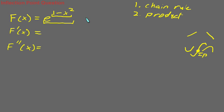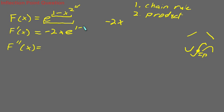The derivative of 1 minus x squared is simply negative 2x. If you can't see why this is, you should go and review your derivatives of polynomials. So the first derivative for this whole equation is negative 2x times e to the 1 minus x squared — that's the derivative of the exponent times the original, which is the chain rule.